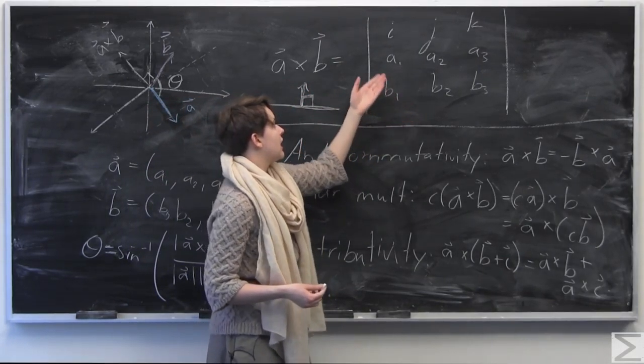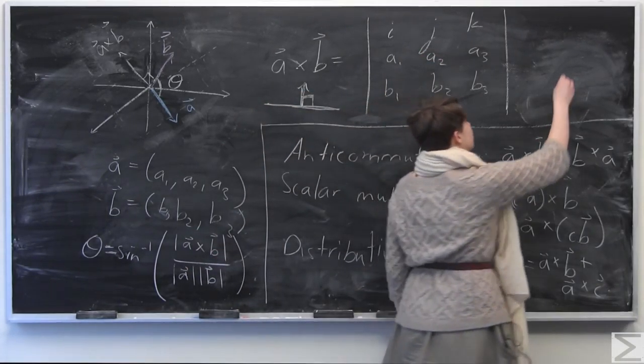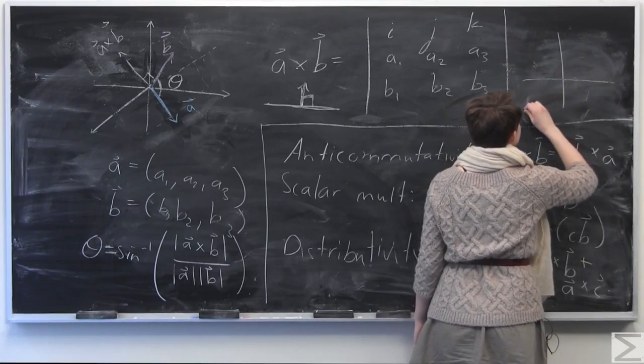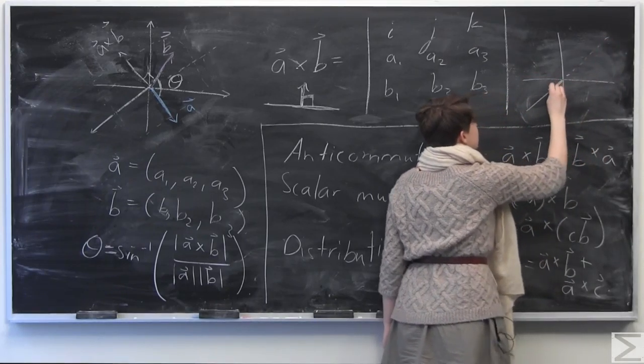OK, so now that we have a basic understanding of what geometrically it means to take the cross product of two vectors, we can define here the cross product of A and B as follows. So we have a determinant of this matrix. We have, in the top row, i, j, and k.